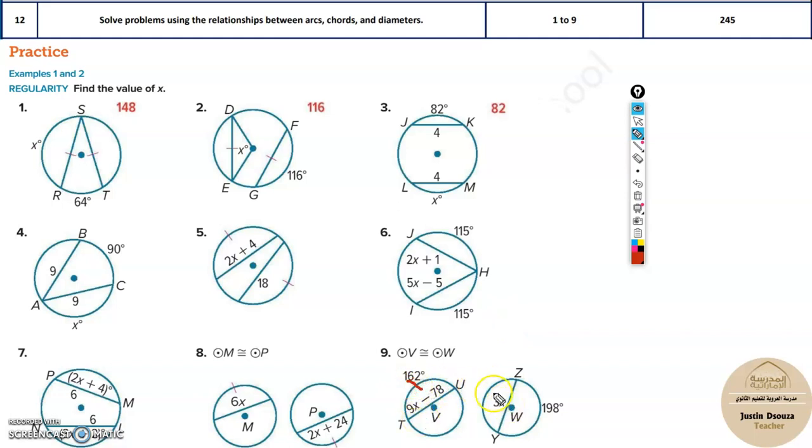Because that is what the theorem says. If these two arcs are equal, then these two chords are also equal.